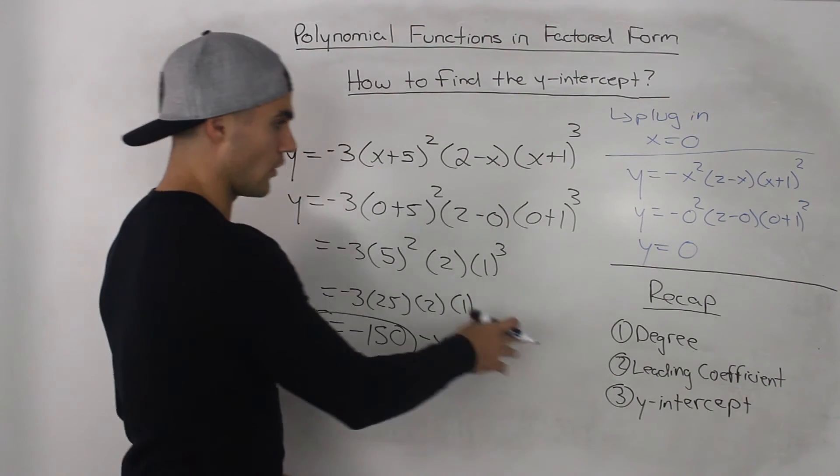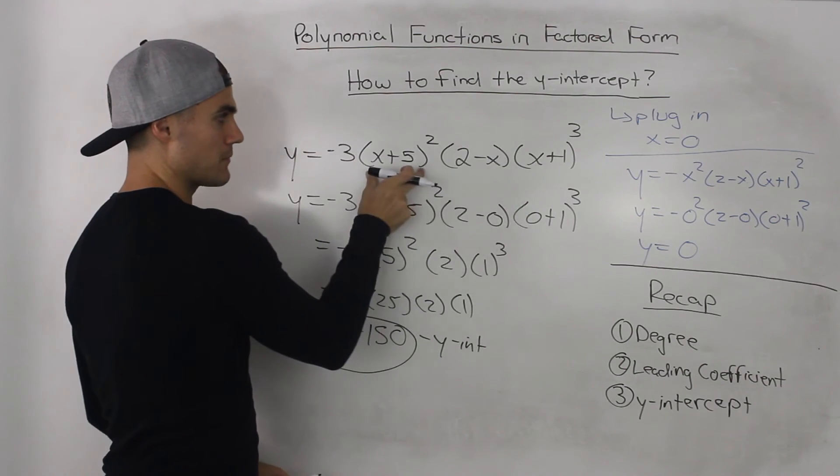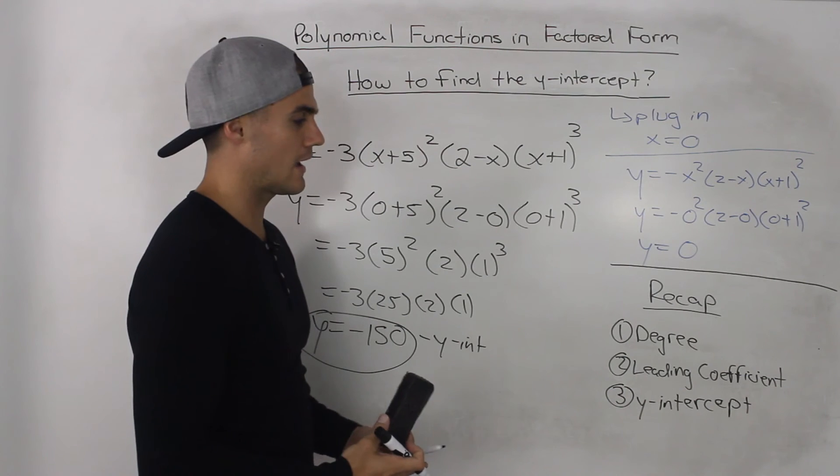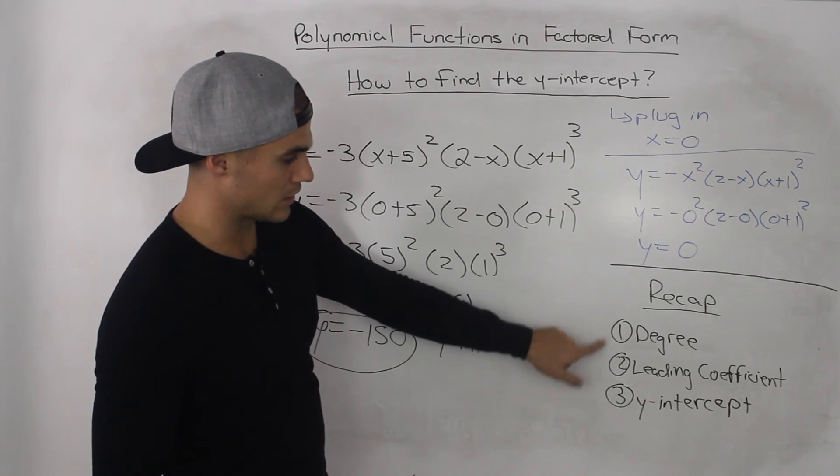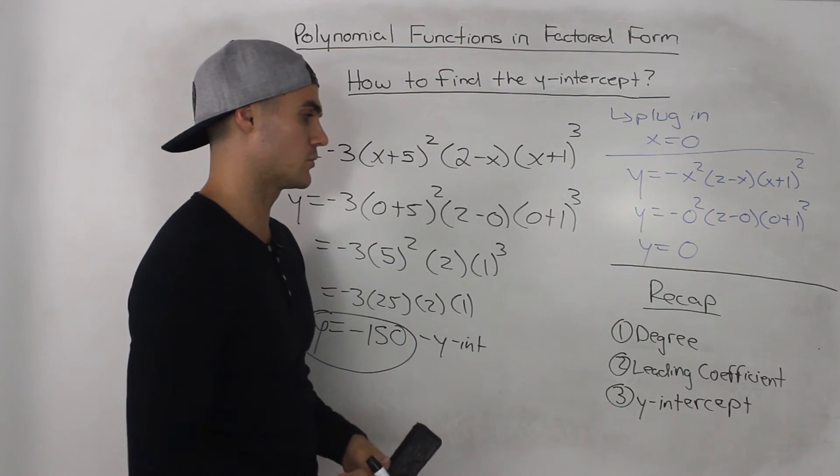In addition to all those, we also can find the x-intercepts pretty easily by making each of these brackets equal to 0. So with all that information, we can now graph it. Especially now since we know the degree and leading coefficient, we can also figure out what the end behavior of the polynomial will be.